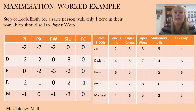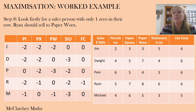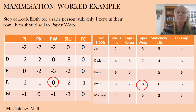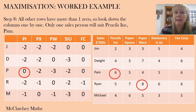Let's bring back our original matrix and work out who to assign to which account. First, look along the rows for a salesperson who only has one zero. Jim has two zeros, Dwight has two, and Pam has two. Ryan is the only salesperson with just one zero in his row, so the optimum allocation for Ryan is to sell to Paperworks. Next, looking down the columns — in the Pencils Incorporated column there's only one person who should be selling there, and that's Pam.